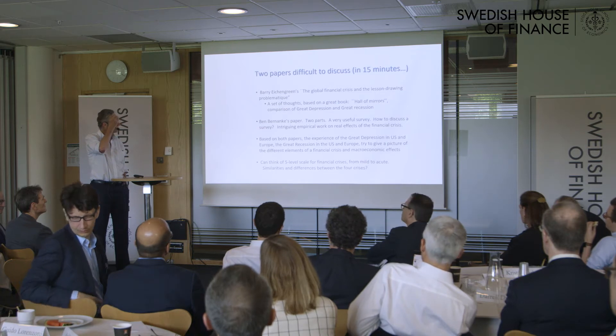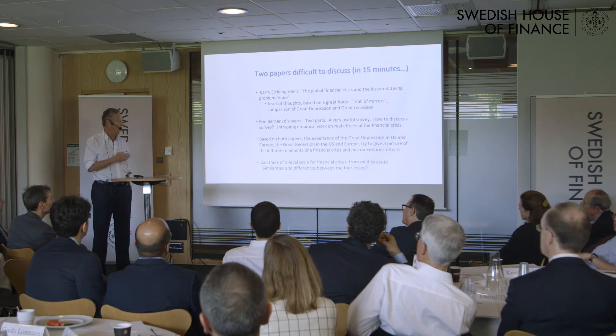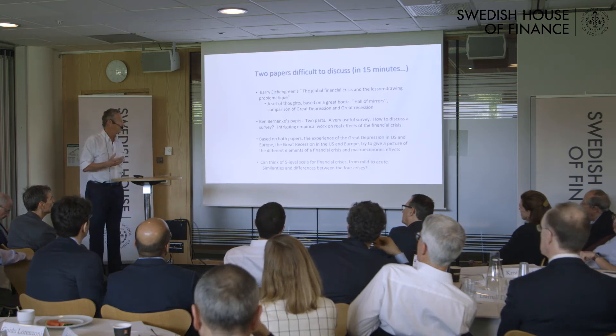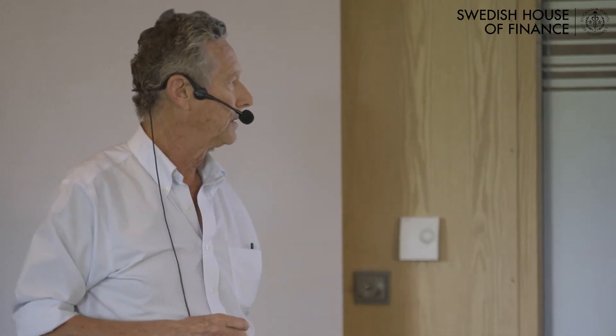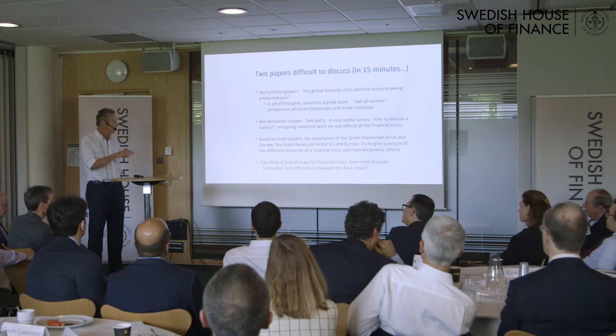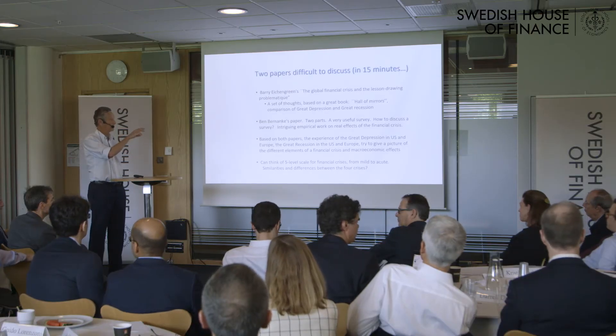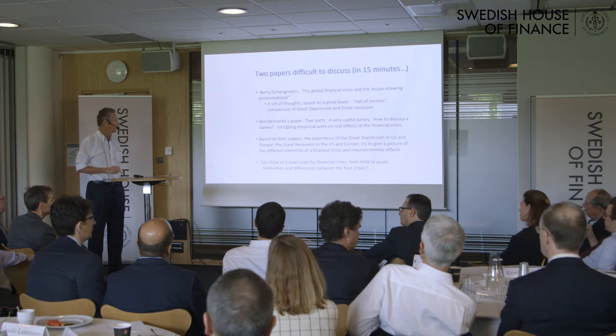What I would do, based on both papers — what they tell us about the Great Depression both in the US and in Europe, and the Great Recession both in the US and in Europe — is try to give a picture of the different elements of a financial crisis, focusing on the macroeconomic effects. I thought of a five-level scale for financial crisis, going from mild run-of-the-mill to acute, and then think about the similarities and differences between the four crises.